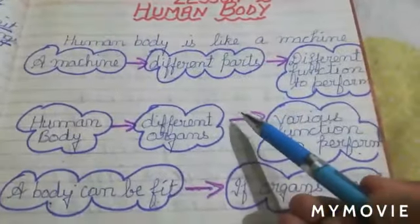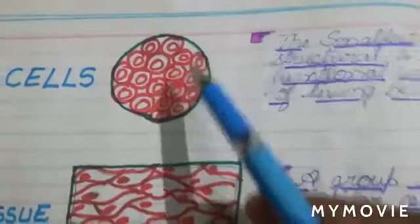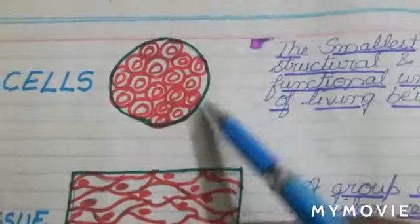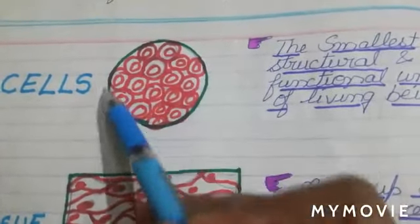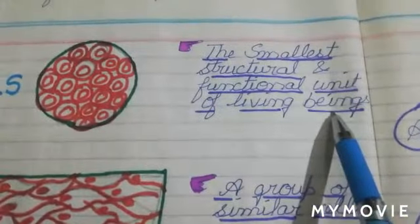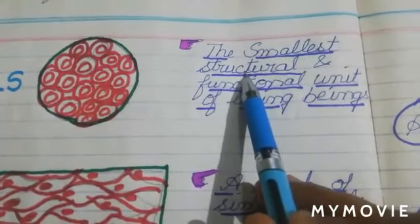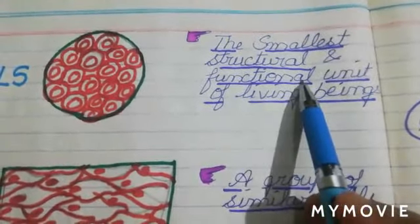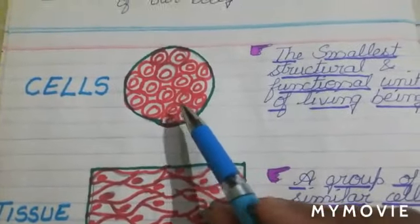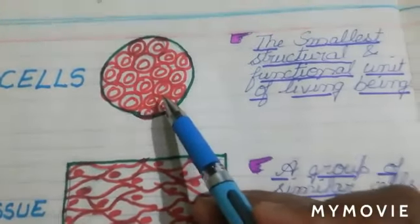What actually is the human body? How is it made? Can you see this? This is a cell. Our body is made up of millions and millions of cells. A cell is the smallest structural and functional unit of a living being, which means with the help of cells, our body structure is formed and it functions properly. In short, it is the foundation and basic unit of your body.